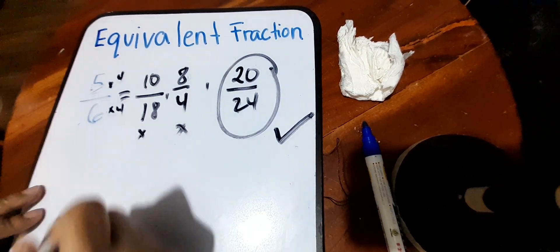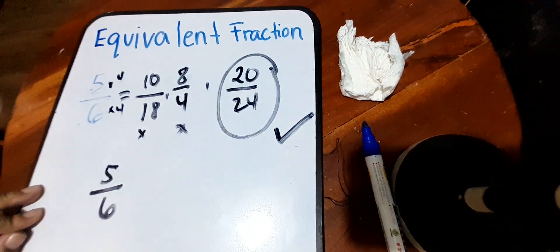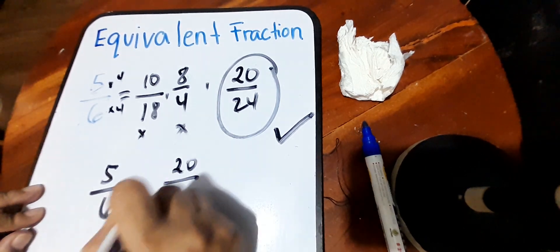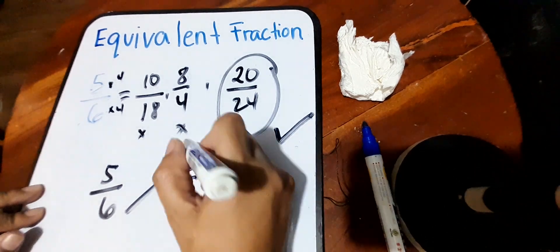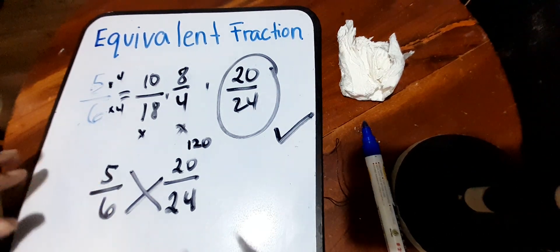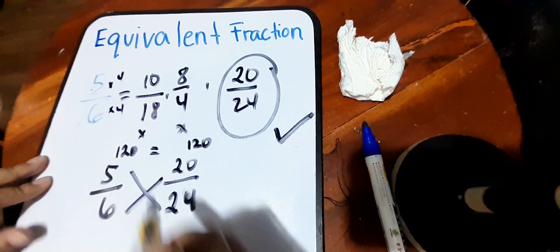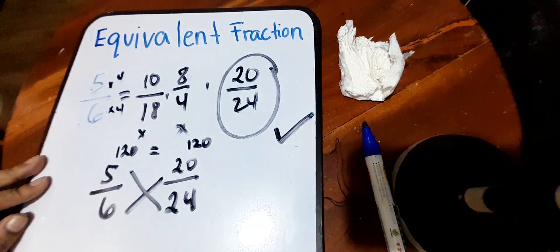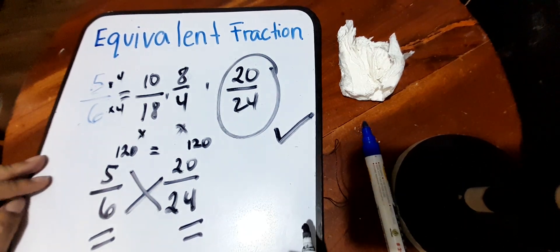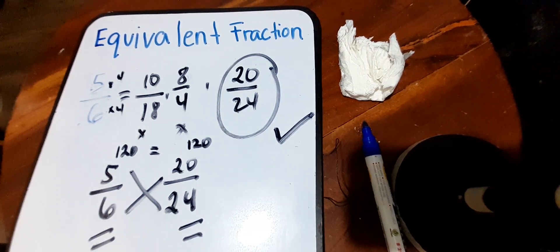Another way of checking is to cross multiply again. Five-sixths and twenty over twenty-four — twenty times six is equal to one hundred twenty, and five times twenty-four is also equal to one hundred twenty. Since we get the same product, therefore five-sixths and twenty over twenty-four is an equivalent fraction. That's how we find the equivalent fraction of a certain fraction.